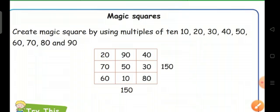Here see one example. Create magic square by using multiples of 10: 10, 20, 30, 40, 50, 60, 70, 80 and 90. So now we can create magic square by using multiples of 10.